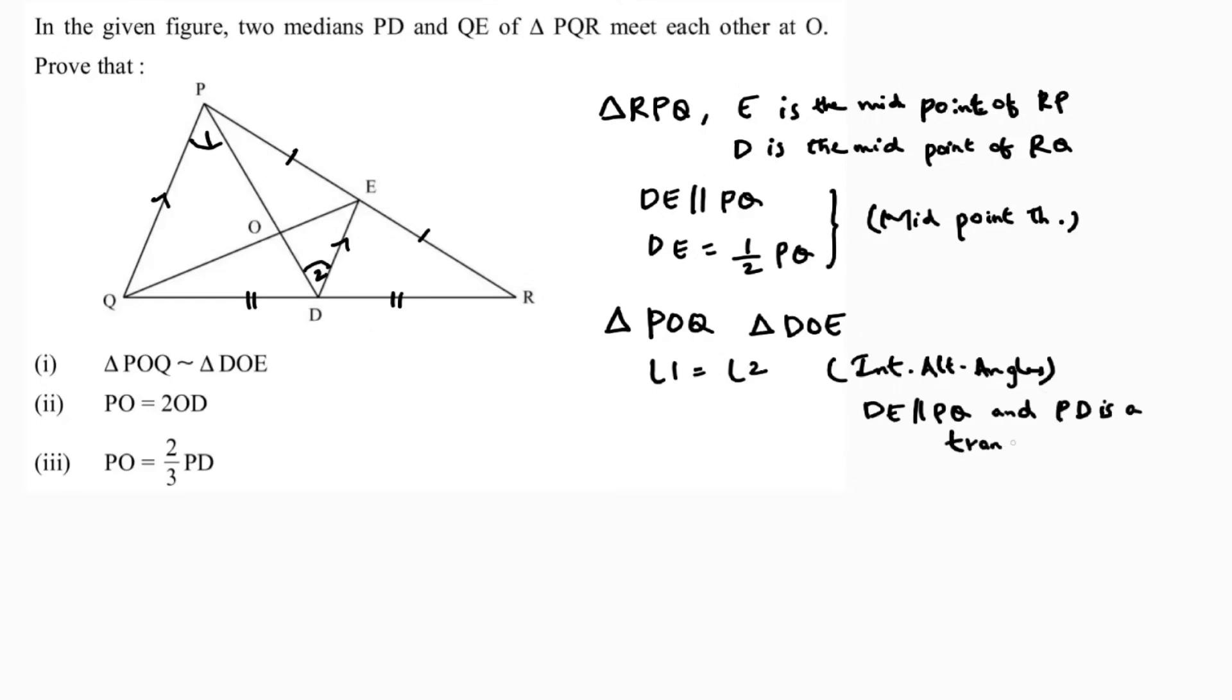Next, angle POQ equals angle DOE by vertically opposite angles. So triangle POQ is similar to triangle DOE by angle-angle similarity.